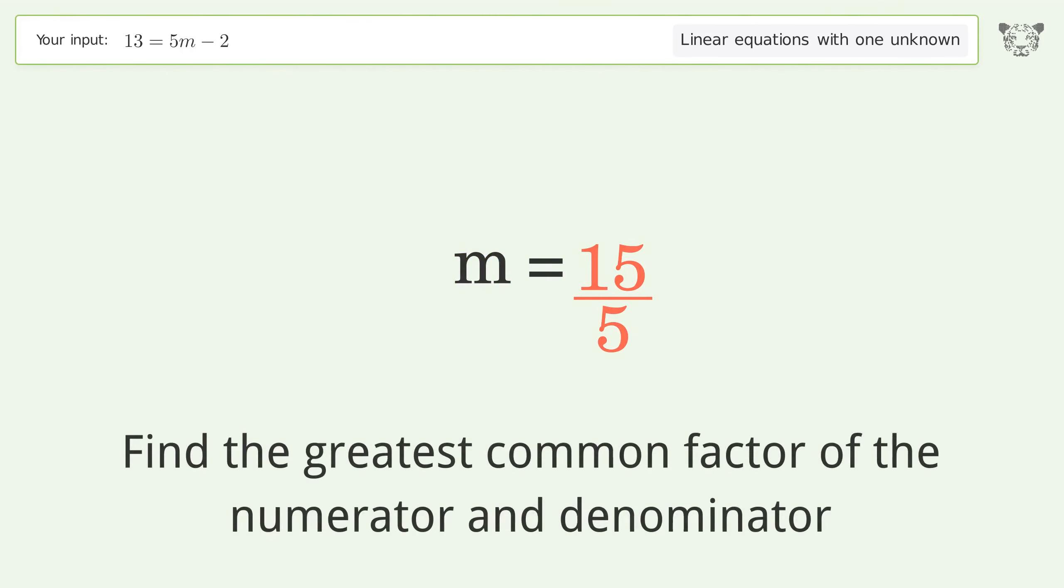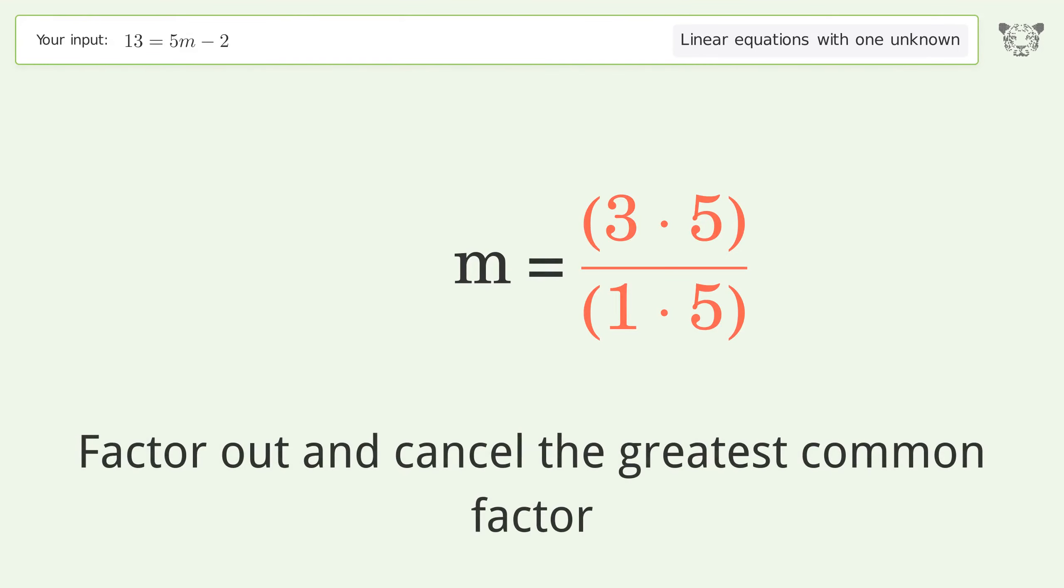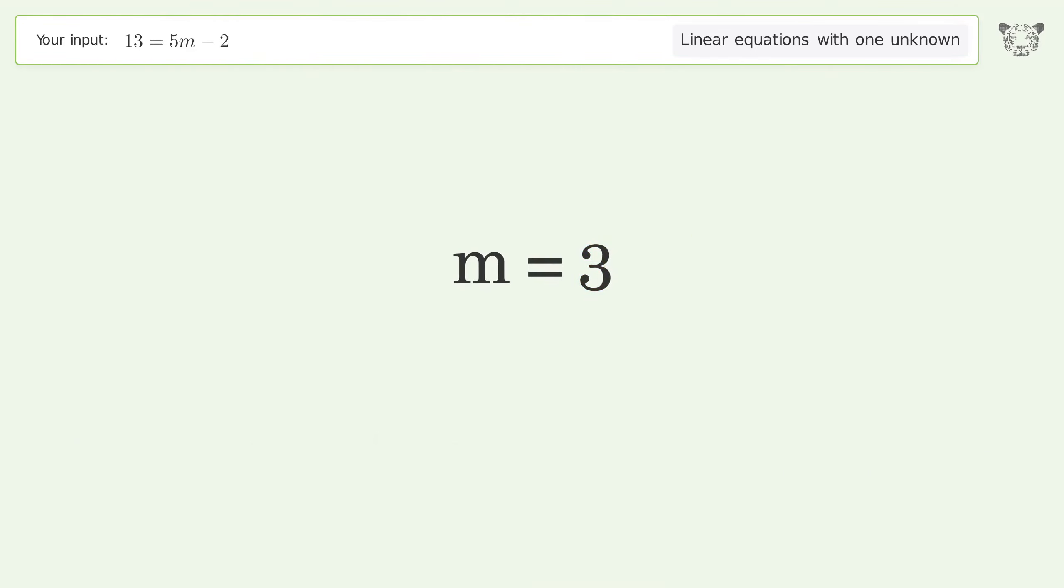Find the greatest common factor of the numerator and denominator. Factor out and cancel the greatest common factor. And so the final result is m equals 3.